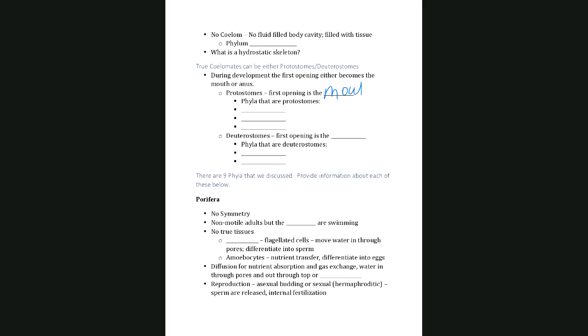Protostomes — where the first opening during gastrulation becomes the mouth — include the arthropods (Arthropoda), mollusks (Mollusca), and annelids (Annelida). Deuterostomes — where the first opening becomes the anus and the mouth is the second opening — include the chordates, which are us and all vertebrates, and the echinoderms, such as sea urchins, sea stars, and starfish.